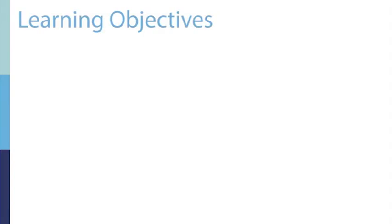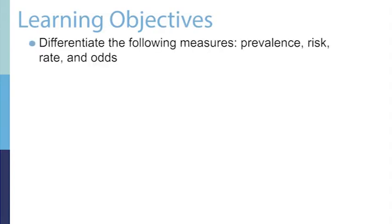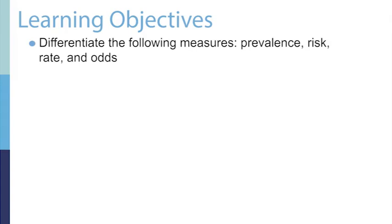After you have reviewed all of the Week 2 lectures, you should be able to complete these learning objectives. They include differentiating the following measures: prevalence, risk, rate, and odds.